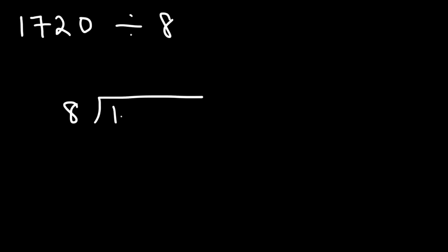So how can we do this using short division? Let me space out the numbers. So the first thing you want to ask yourself is how many times does 8 go into 17? 8 goes into 17 two times. 8 times 2 is 16 and if you subtract 17 by 16 you'll get a difference of 1.